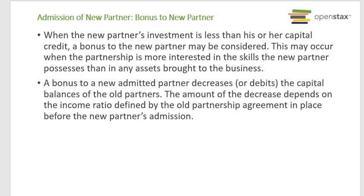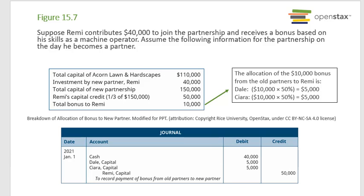Admission of a new partner — bonus to the new partner. When a new partner's investment is less than his or her capital credit, a bonus to the new partner may be considered. This may occur when the partnership values the skills of the new partner more than any assets he brings. A bonus to an admitted partner decreases the capital balances of the old partners, based on the income ratio in place before the new partner's admission. For example, suppose Remy invests $40,000 this time and receives a bonus based on his skills.